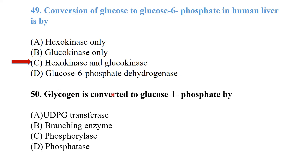Glycogen is converted to glucose-1-phosphate by the enzyme phosphorylase, because a phosphate group is added during this reaction.